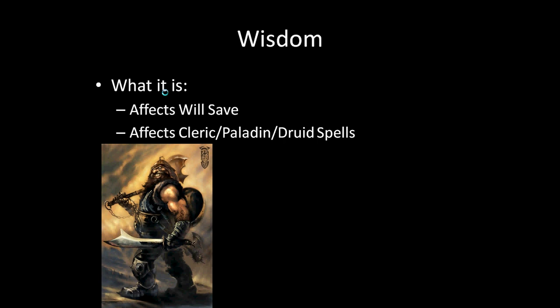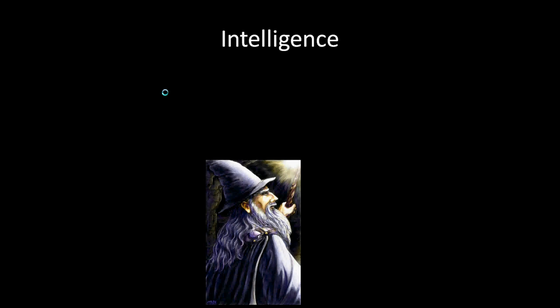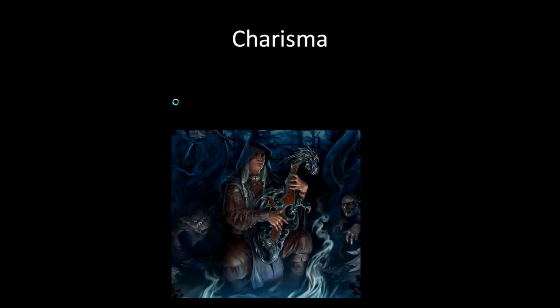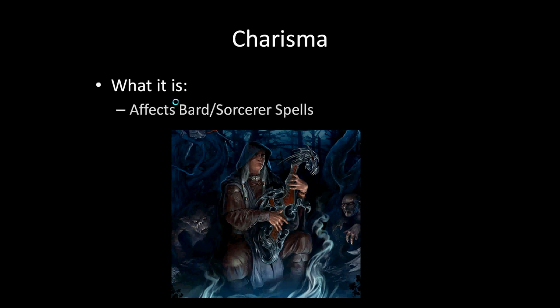Intelligence is basically your absent-minded professor — very intelligent but not necessarily wise. It affects your total skill points and how many wizard spells you get. The final stat is Charisma, generally called the throwaway stat. It's how people perceive you, how people look at and judge you — a naturally charismatic leader. The main thing charisma does in the game, besides skills, is affect Bard and Sorcerer spells. Hopefully this helped — thanks for watching the lesson, I'll see you next time.